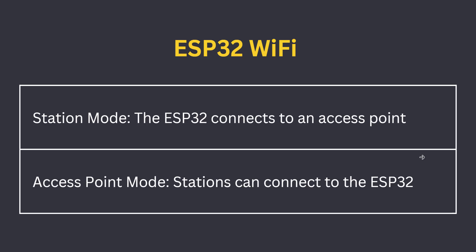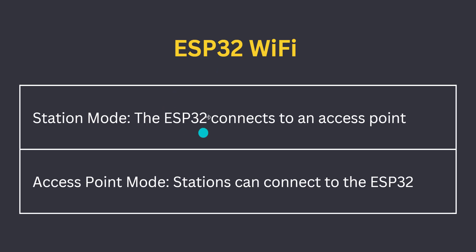ESP32 Wi-Fi works in two modes. One is Station mode, another one is Access Point mode. In Station mode, the ESP32 connects to an Access Point — meaning your ESP32 connects to the modem or it can connect to the router.